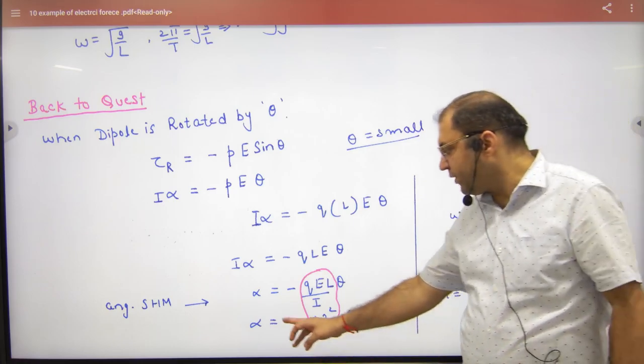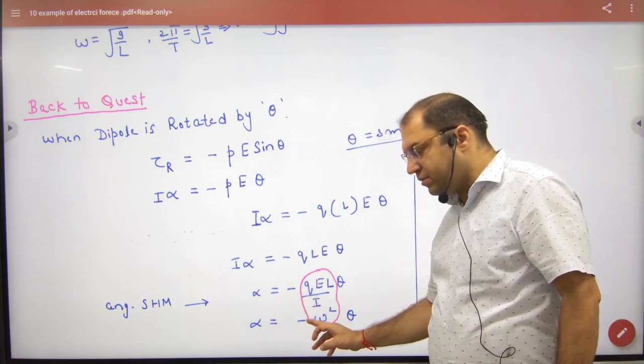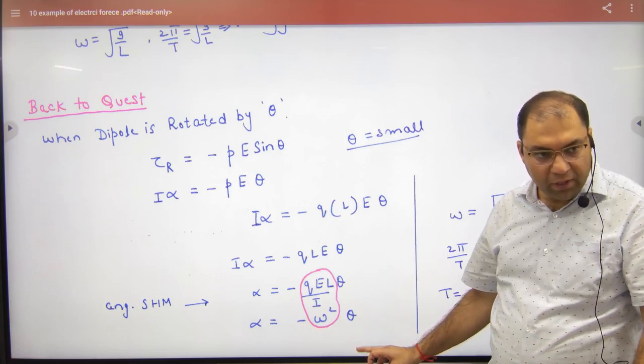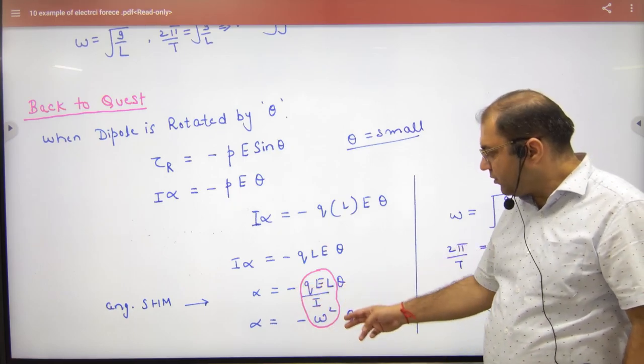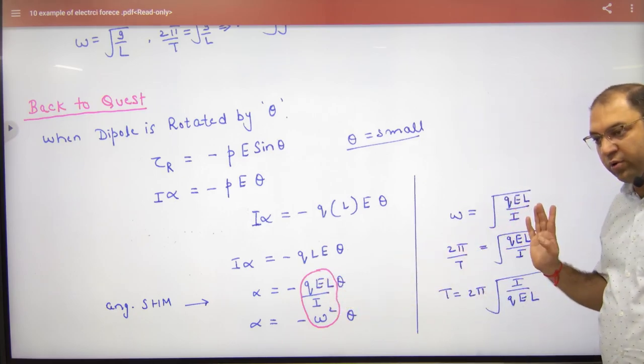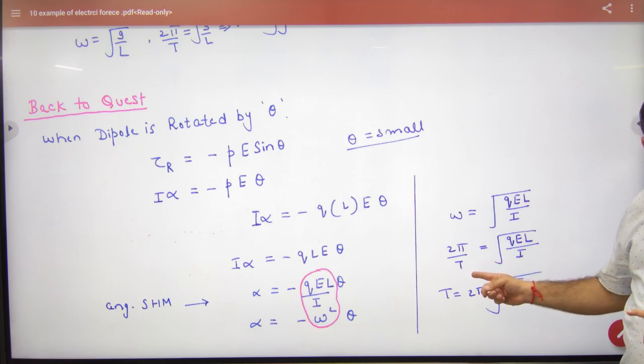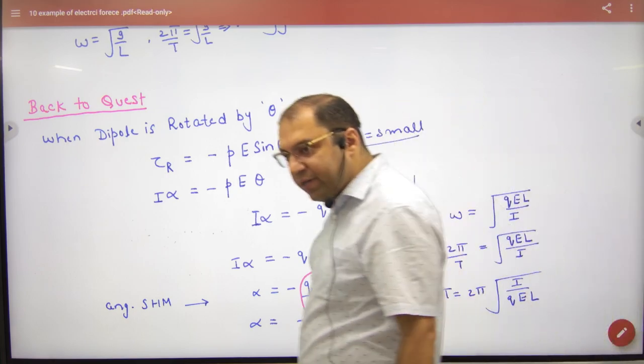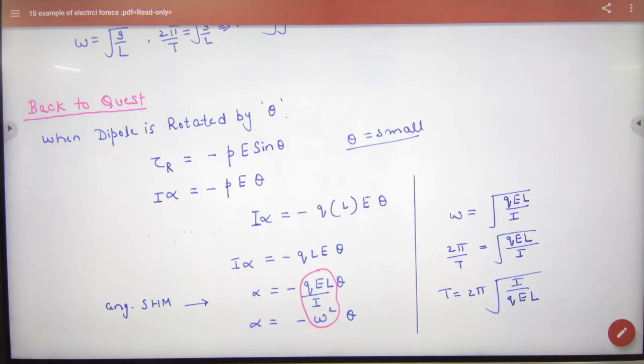We have angular SHM with equation alpha equals minus omega square theta. If we compare it, omega square equals... omega equals... Omega is 2π by time period. Cross multiply, time period can be calculated. So we've shown the restoring torque. This point is clear. Tick.